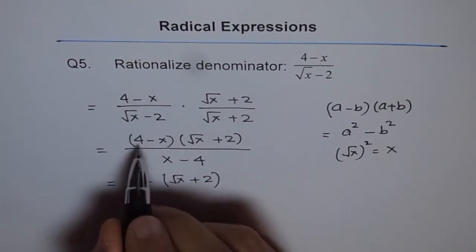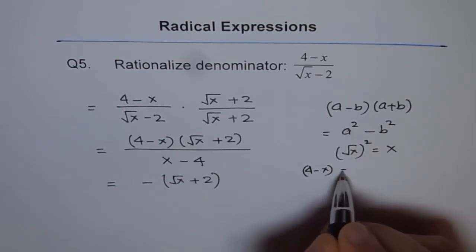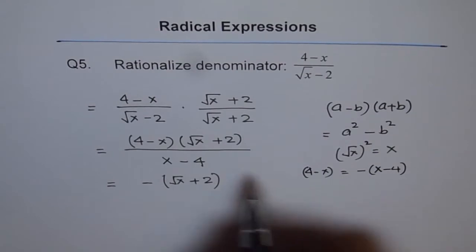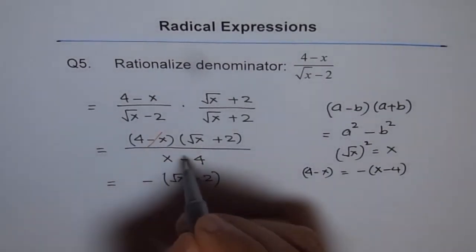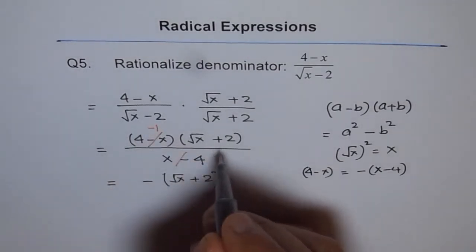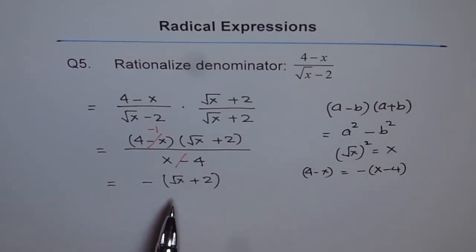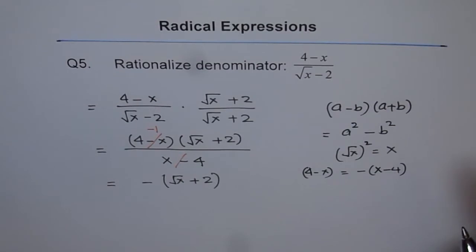Because we can write 4 minus x as equals to minus of x minus 4, and so it gets divided with minus 1. So it is minus 1 times this. And therefore, we get this as our answer. So that is the rationalized form of the given expression after rationalizing the denominator.